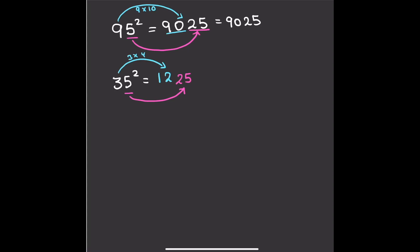Let's look at even smaller numbers if you guys haven't quite understood it yet. Let's start with 15 squared. With 15 squared, we can see that 5 times 5 is 25. And we're going to times 1 by its next highest number, which is obviously 2, so we put the 2 down. The answer is going to be 225.